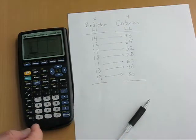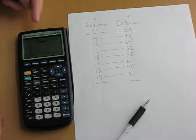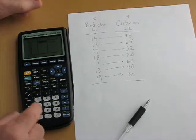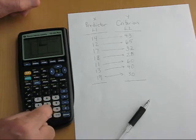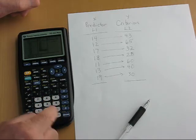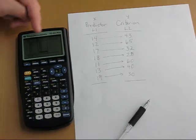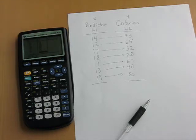We can now move to list 2 using the scroll over key, scroll to list 2. It jumps to the top as you can see here, and now we can enter the list 2 data. We have a 43 ENTER, 65 ENTER, 32 ENTER, 28 ENTER, 60 ENTER, 40 ENTER, and 30 ENTER. And we double check, make sure our numbers are in fact what we intended. 11 to 60, yes, 13 to 40, and 19 goes with the 30. Good to go.